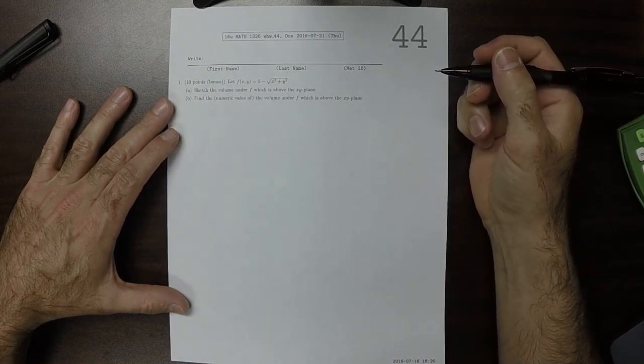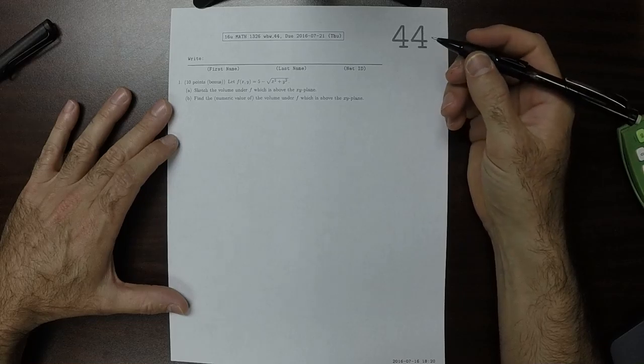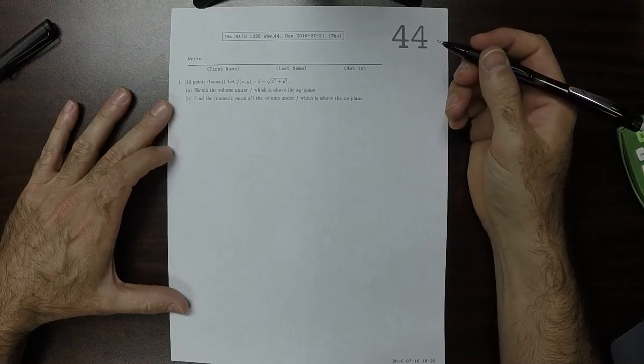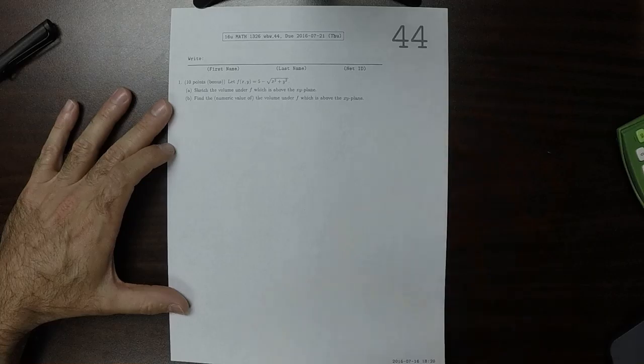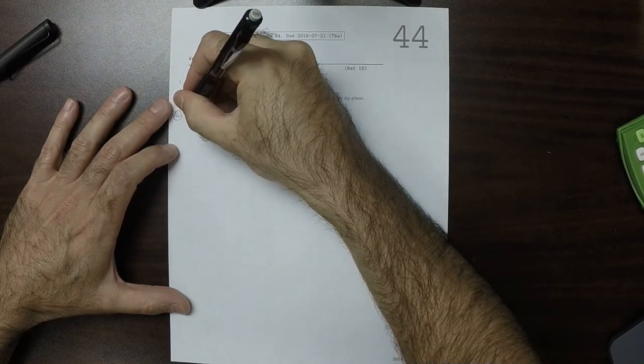This is the key to written homework 44. Part A says sketch the volume. So for part A, to make our sketch,